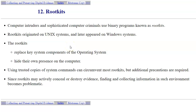Computer intruders and sophisticated computer criminals use programs known as rootkits. Rootkits originated on Unix and later appeared on Windows, which is a popular platform for both home use and businesses. Rootkits replace components of the operating system — that's the definition. The OS components are replaced and the rootkit becomes active, acting as those components.